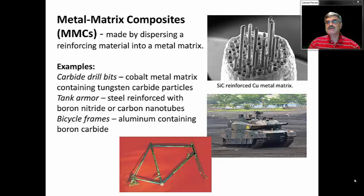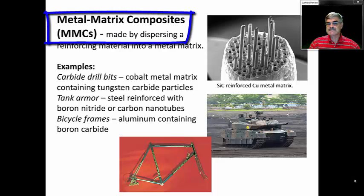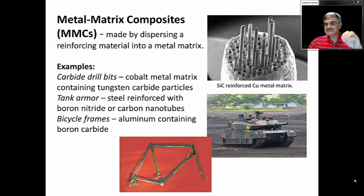The last example I want to show you of composite materials is a relatively new type of composite material called metal matrix composites or MMCs. These are made by dispersing, this is in some sense like the reinforced concrete example. But in this case it is some type of fiber and that fiber can be a chemical substance including carbon nanotubes that are inserted into the matrix of a metal. To strengthen that metal, to improve the tensile strength and the shear strength of metals.